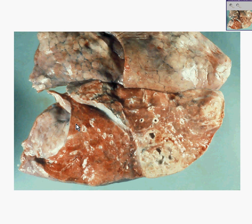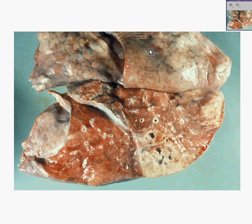Here is another lung. Notice here's the pleural surface, here's a cut surface, here's some more pleural surface. Here is some fine subpleural stippling by anthracotic pigment, which is very common, almost to the point where I could say it's normal.